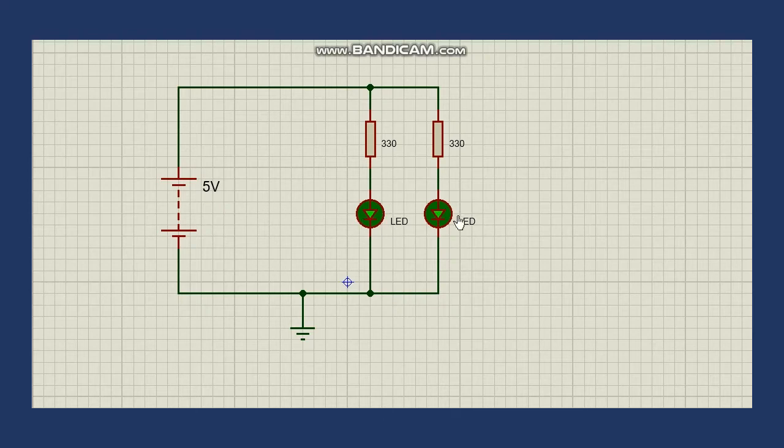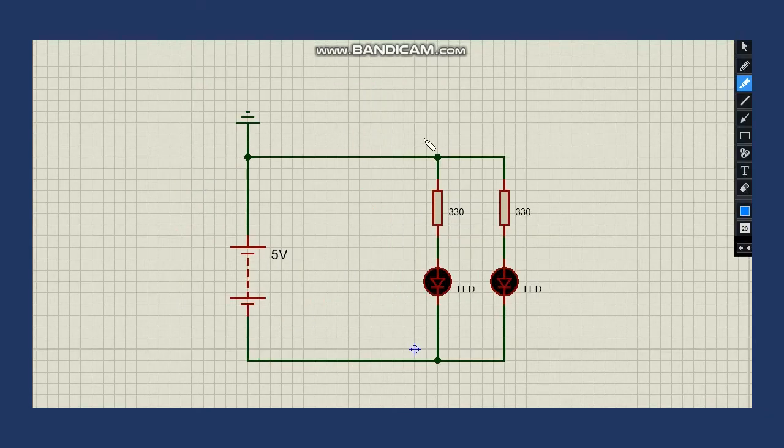Now let us try another circuit where the ground is connected to the positive terminal of the battery. As you can see in this circuit ground is connected to the positive terminal of the battery. Now let's see the simulation of this circuit. As you can see the circuit works in the same way as the previous case. There is no change in the working of circuit when we change the ground from negative terminal of the battery to the positive terminal of the battery.